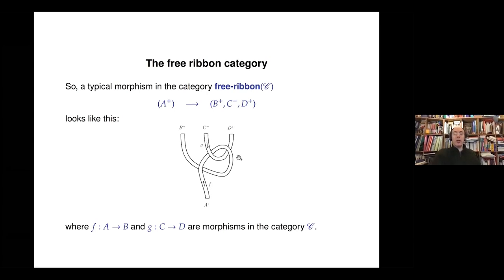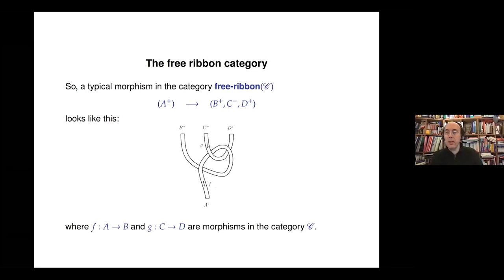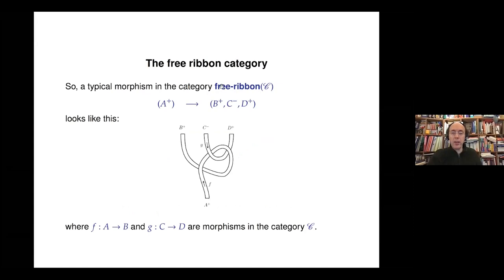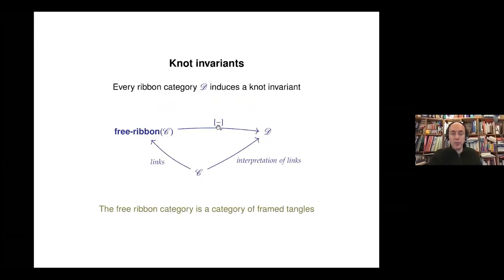In the free cartesian closed category, maps were lambda terms — very symbolic objects. Here, they are purely topological. My purpose now is to show that there is a way to think about lambda terms, at least in good situations where the lambda terms are linear, in connection to the next talk by Noam Zeilberger. When the lambda terms are linear, we get a slightly mysterious but very natural connection between proofs and knots.